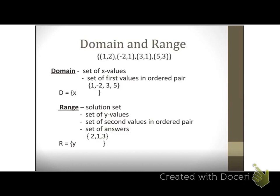The main way we write the domain is set builder notation. D stands for domain. So the domain equals the set of all real numbers X such that X equals, and then we have our X values. I want you guys to start getting in the habit of using this set builder notation. That tall bar just means 'such that' — X equals, and you list your X values.